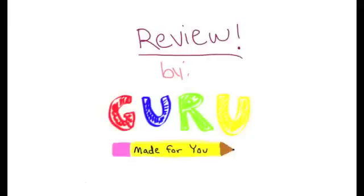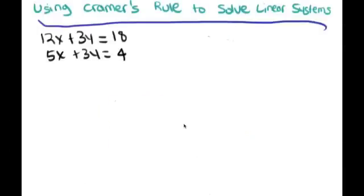This is a lesson on using Cramer's Rule to solve linear systems. Gabriel Cramer was a mathematician who developed a rule using a matrix to solve a linear system. This is the fifth method to solve a system of linear equations, but first let's solve a simple system so we know what the answer is.